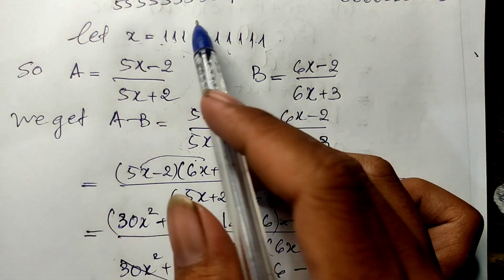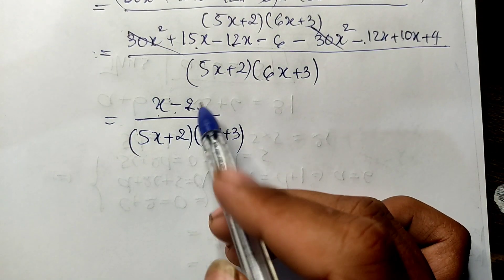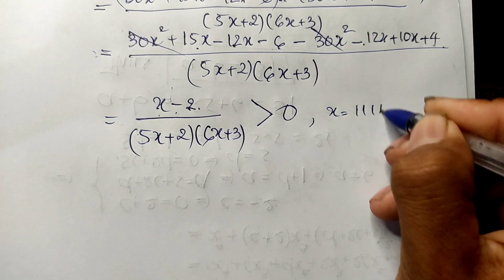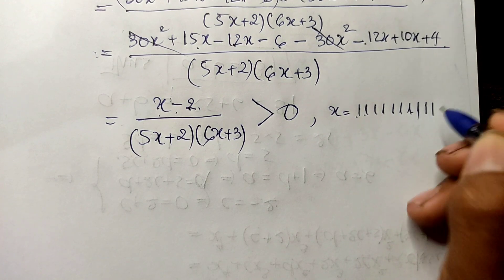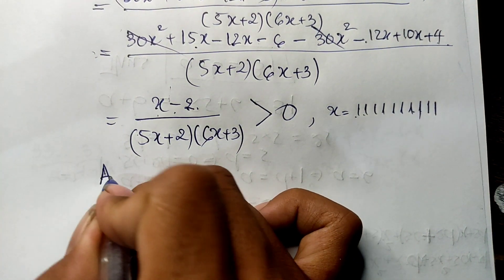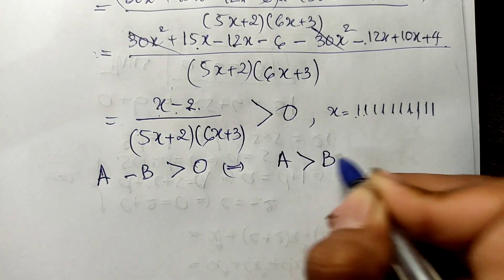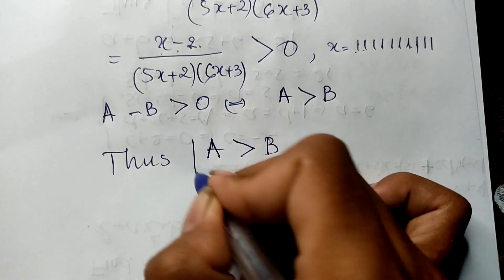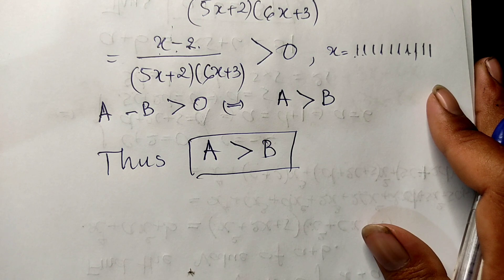We know that x is equal to 1 repeated 10 times, so x minus 2 is positive. Because x equals 1, 1, 1, 1, 1, 1, 1, 1, 1, 1, 2, 3, 4, 5, 6, 7, 8, 9, 10 — ten terms of 1. So a minus b is positive, which means a is greater than b. That is our solution. Thanks for watching — if you like my videos, please subscribe to my channel for more exciting videos. Goodbye!